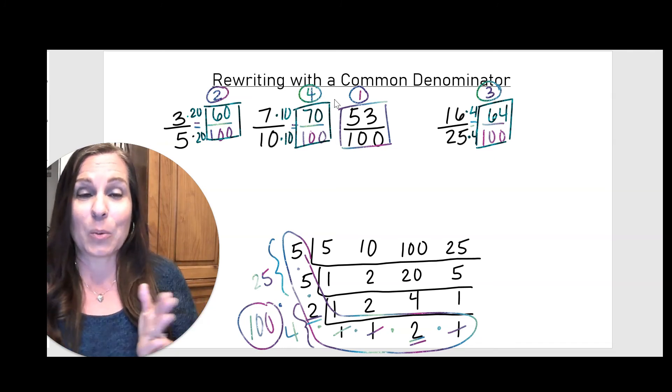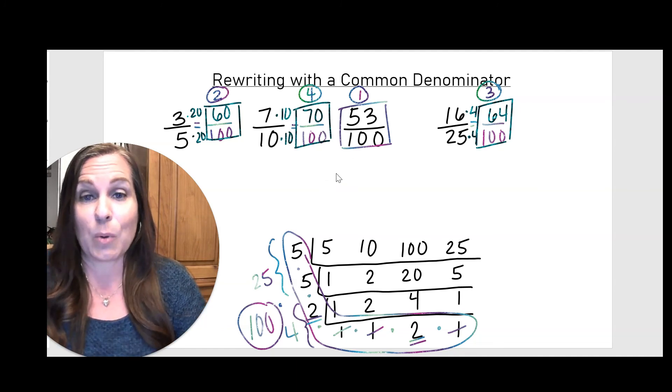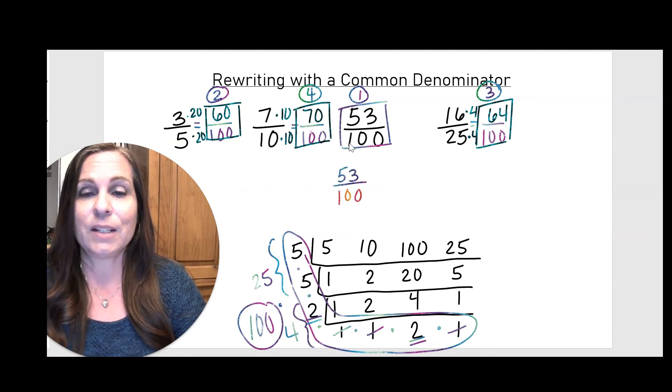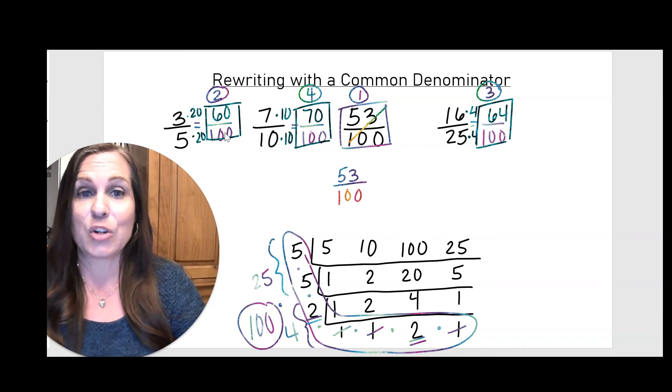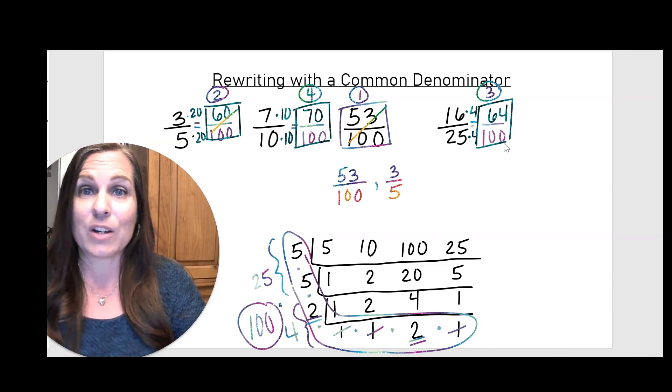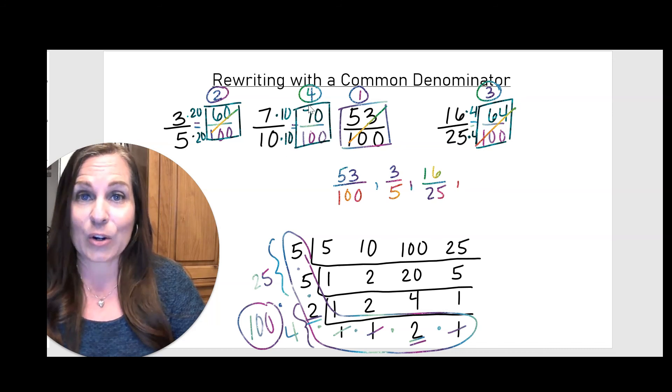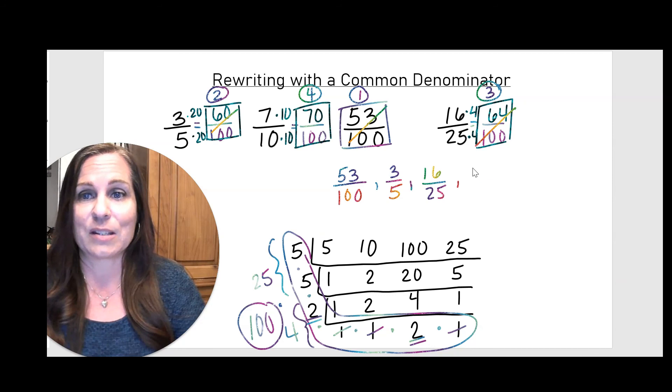But when I write them in order, I want to write the original fractions, the ones that were given before I rewrote them with a common denominator. So the first fraction, the smallest fraction in the list, is 53 hundredths. Second is 60 hundredths, but the original fraction for 60 hundredths that I was given is three-fifths. After that is 64 hundredths, but the original fraction was 16 twenty-fifths. And then the largest fraction here is 70 hundredths, and that was given as seven-tenths originally. So here are all of my fractions written in order from least to greatest by rewriting with a common denominator.